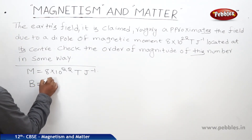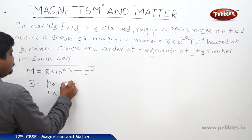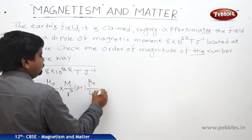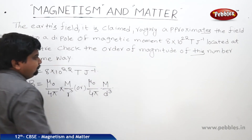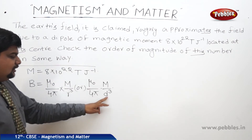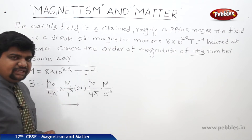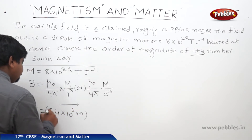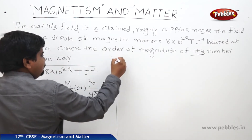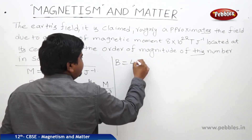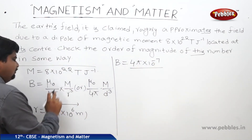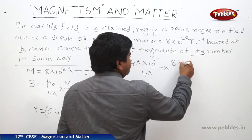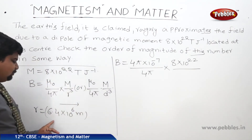The magnetic field at the center due to the dipole is given by B = (mu_0 / 4π) × (M / R³). Here R is the radius of the Earth, R = 6.4×10⁶ meters. Substituting: mu_0/4π is 10⁻⁷, M is 8×10²², and R is 6.4×10⁶.